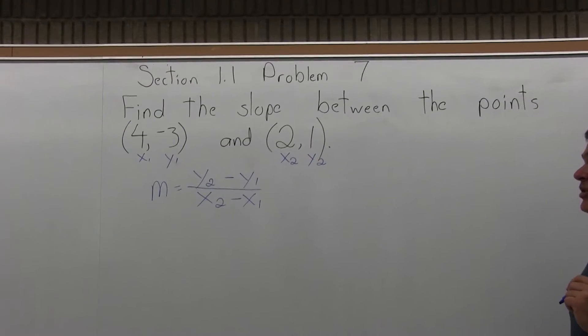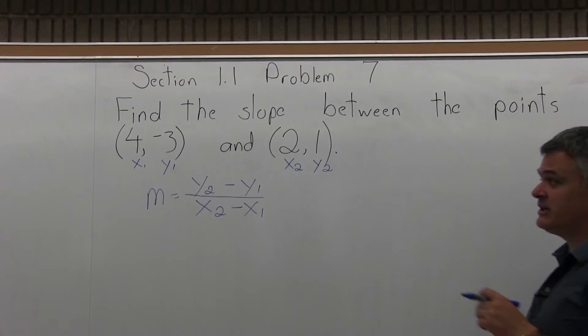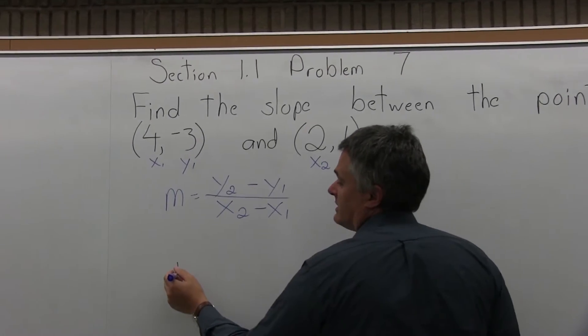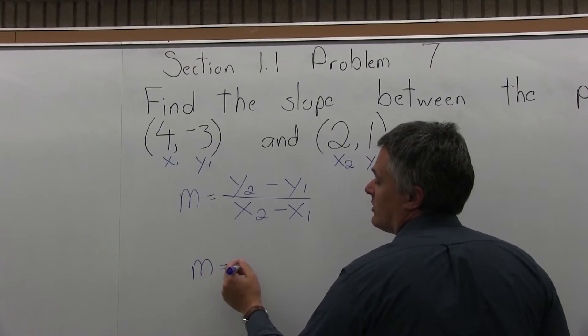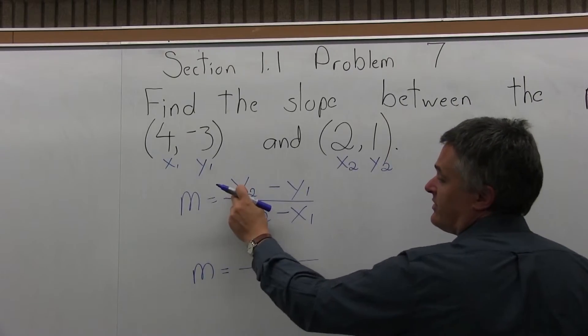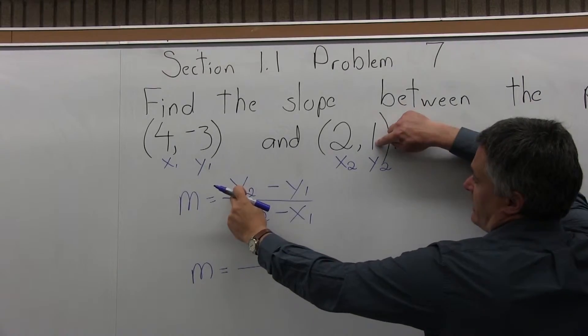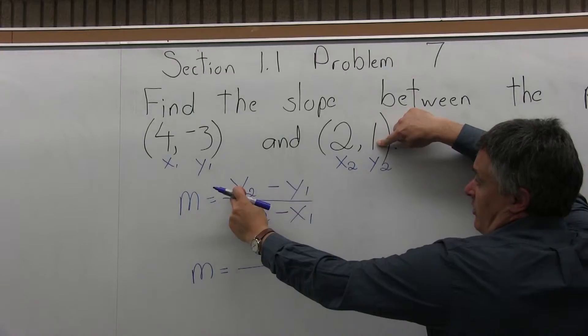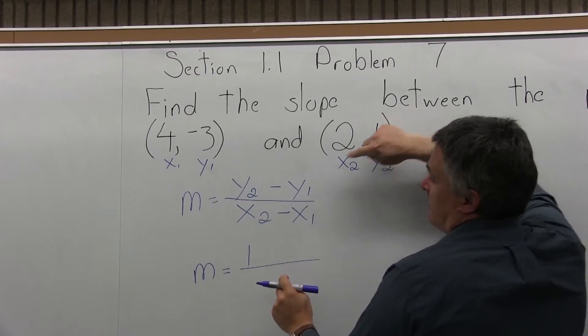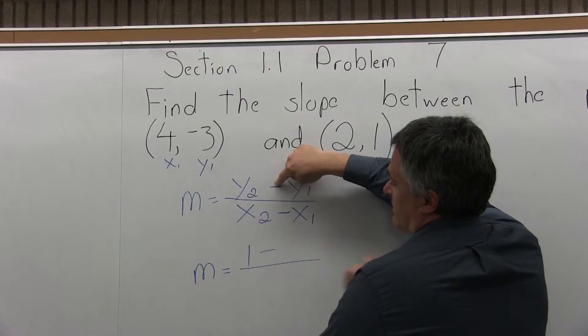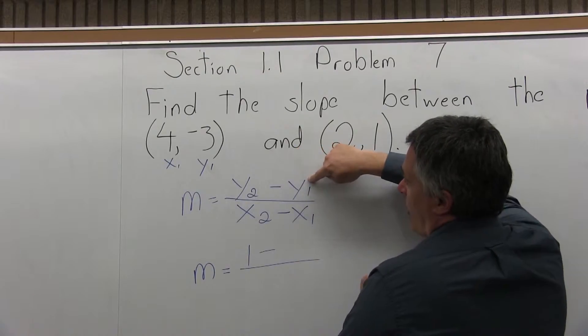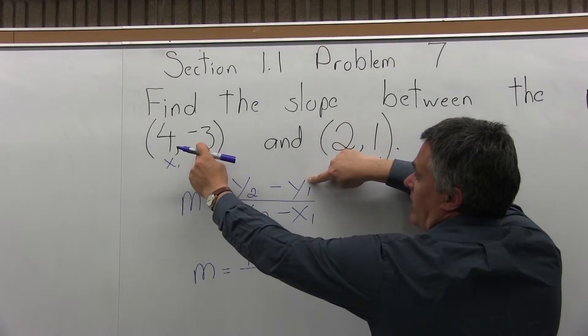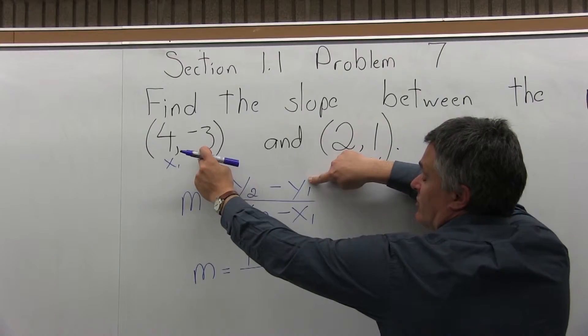And now that they're labeled, you can go ahead and fill in the formula. And they plug in easy enough. So m equals, so y2 I want first. So looking at how I've labeled my points, y2 has a value of 1. Then I have a minus from the formula, so I put that in, y1. So y1, looking over here, is -3.